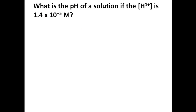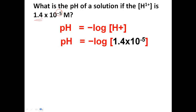Now I'm changing it — I'm giving you 1.4×10⁻⁵. Your pH is still going to be in the range of negative 5 (around 5). Set it up, do your substitution, find the log, change it to positive if negative — and you'll find the pH is 4.85. It's in the ballpark of that negative exponent.